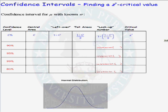In this lesson, we are going to figure out how to find z-critical values when we are forming a confidence interval for the population mean mu when we know the population standard deviation sigma.